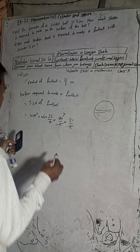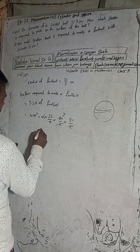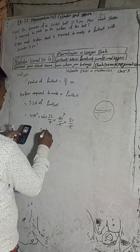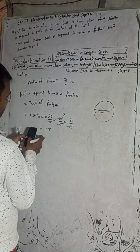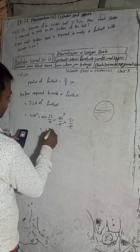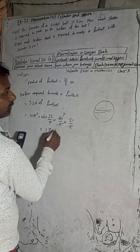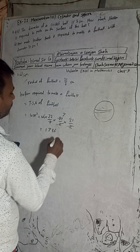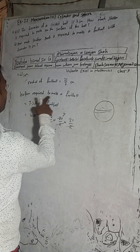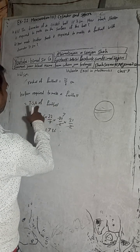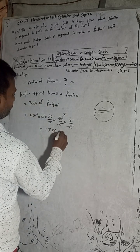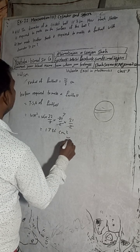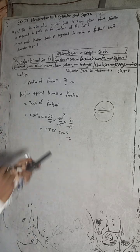When we calculate this value, we get 1386. So the leather required to make the football is 1386 cm². This is the total surface area, and that is our solution.